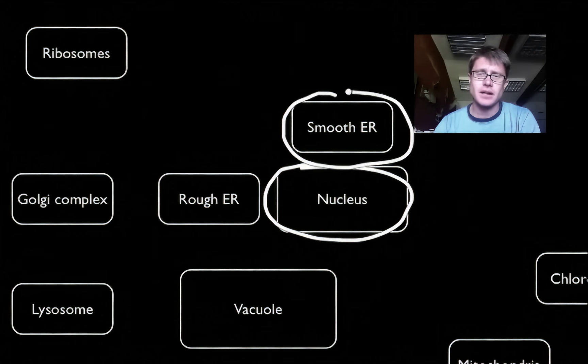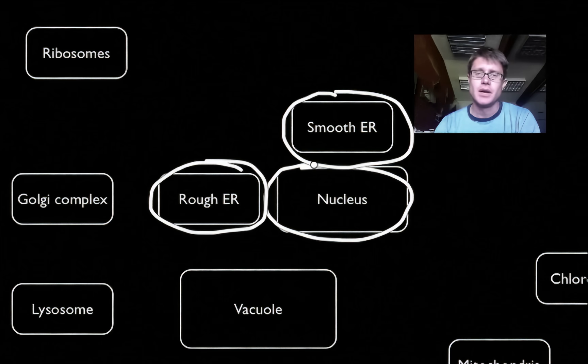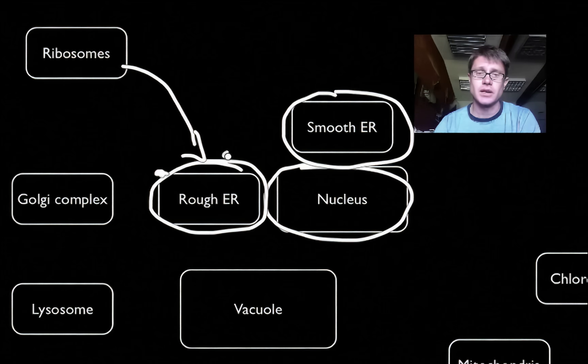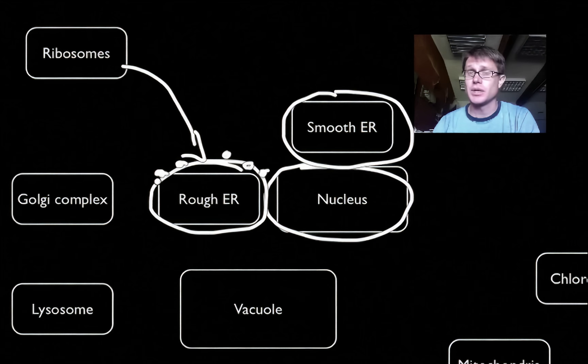If we work outward from that, right on the outside we have the ER, endoplasmic reticulum. We have both smooth and rough ER. The rough ER is rough because it has little ribosomes on it. So what do ribosomes do? Those are going to be where we produce proteins, that's the site of protein synthesis. The rough ER gives us a lattice where we can actually do that and make different constituents of the cell.